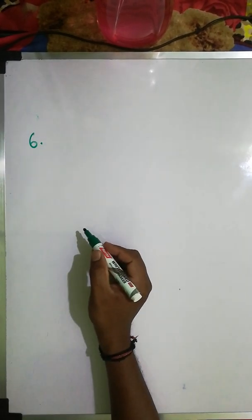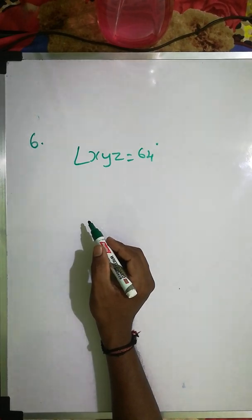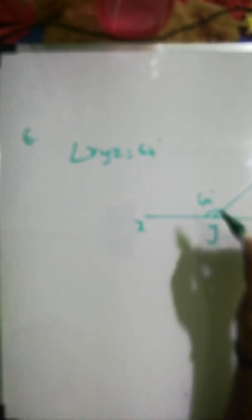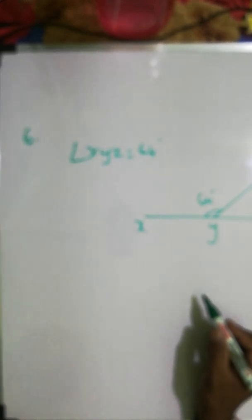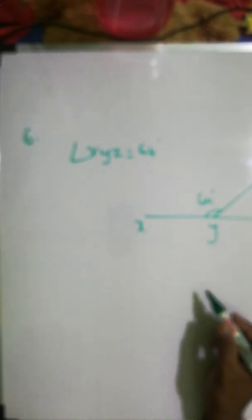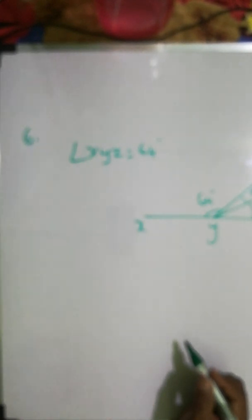Question number 6, the last question. Angle XYZ is given as 64 degrees, and XY is produced to point B. Ray YQ bisects angle ZYP — meaning angle ZYQ equals angle QYP, both equal to A. We need to find angle XYQ and the reflex of angle QYP.